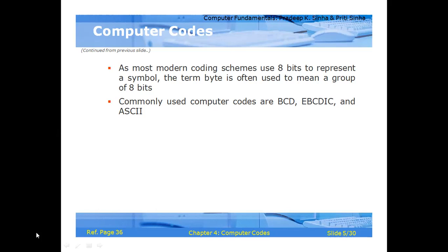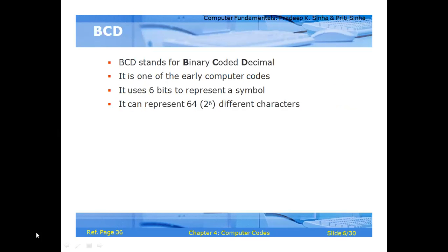The commonly used computer codes are BCD, EBCDIC, and ASCII. The first one is BCD code. BCD stands for Binary Coded Decimal. It is one of the early computer codes. It uses six bits to represent a symbol and can represent 64 characters — that is, 2 to the power of 6.